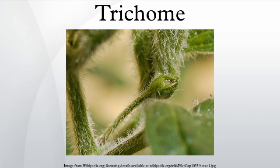Trichomes on plants are epidermal outgrowths of various kinds. The terms emergencies or prickles refer to outgrowths that involve more than the epidermis, though this distinction is not always easily applied. There are also non-trichomatous epidermal cells that protrude from the surface. A common type of trichome is a hair.